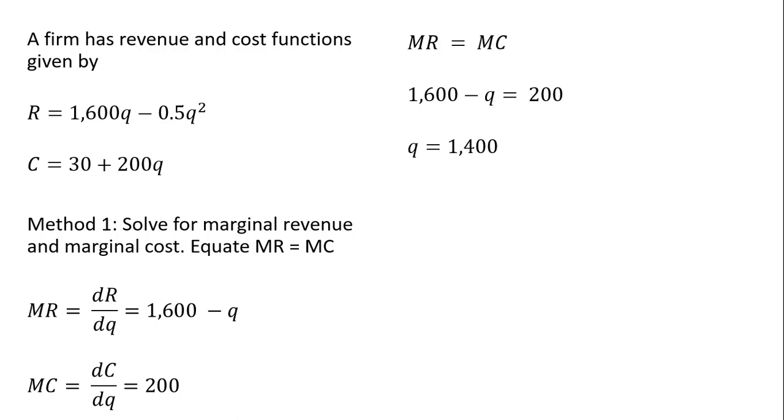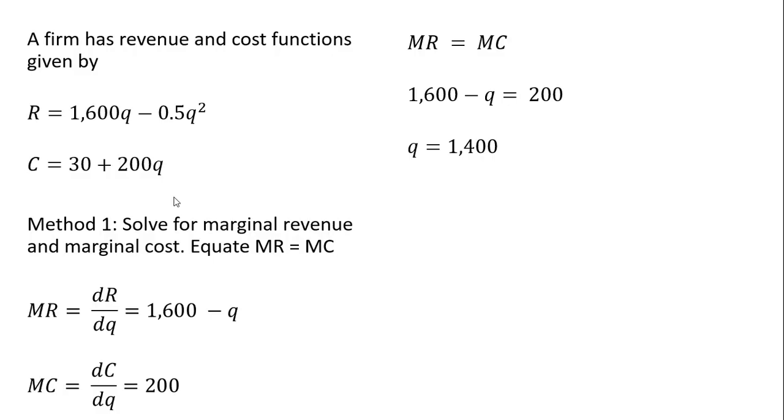And if we wanted to get total profit, we could just plug this 1,400 into the revenue function and then subtract out the cost at 1,400 units of output. Okay, I'll stop here.